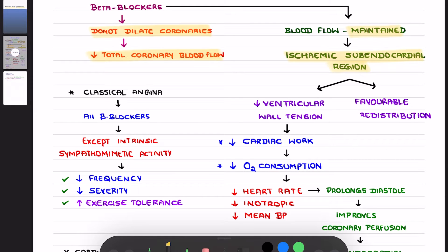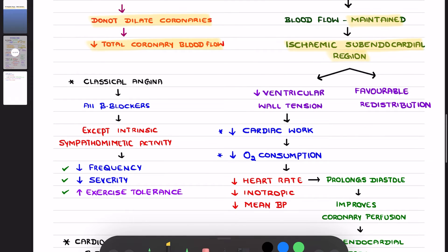What are those two mechanisms? First, it will decrease the ventricular wall tension. By decreasing ventricular wall tension, it decreases the cardiac work and the load on the cardiac system. Thereby the cardiac system requires lesser oxygen to function — it requires less oxygen consumption.